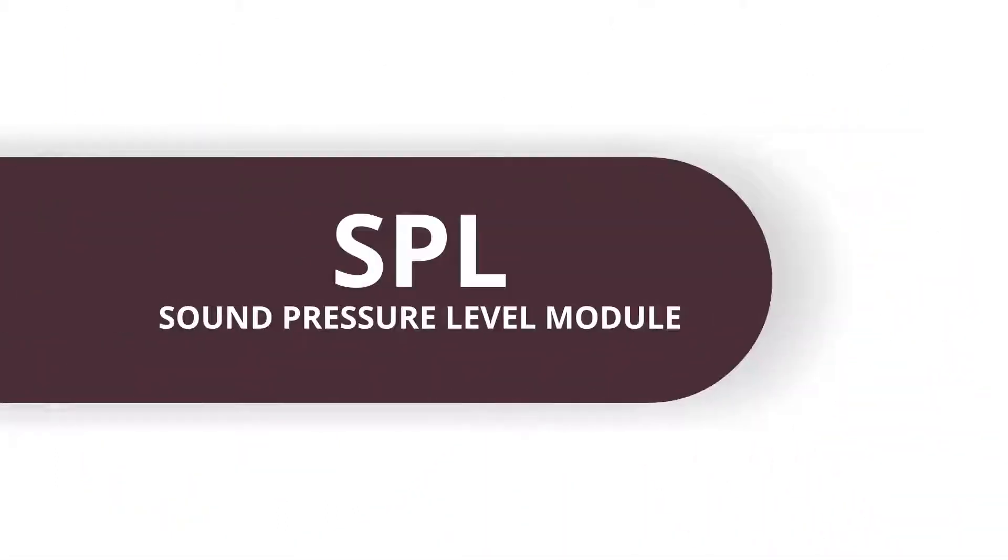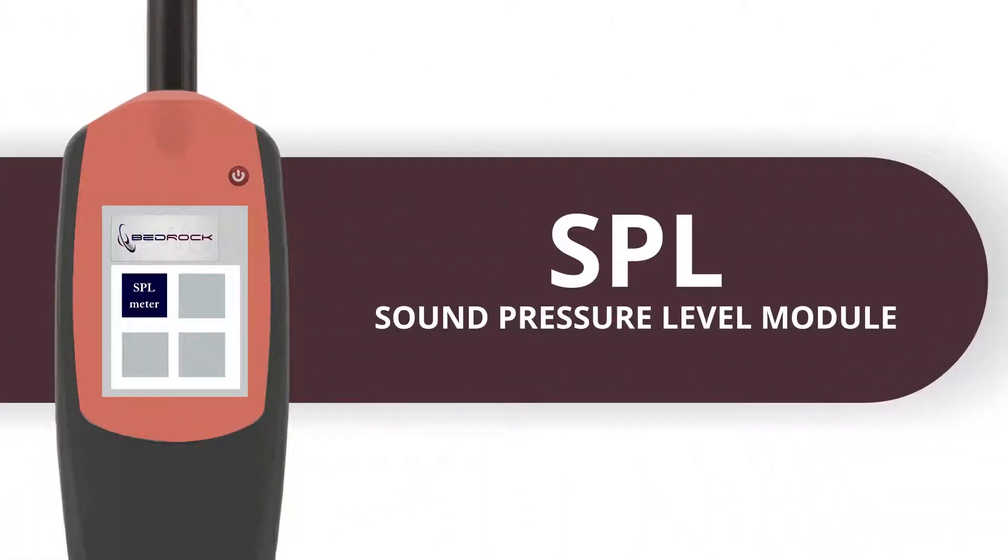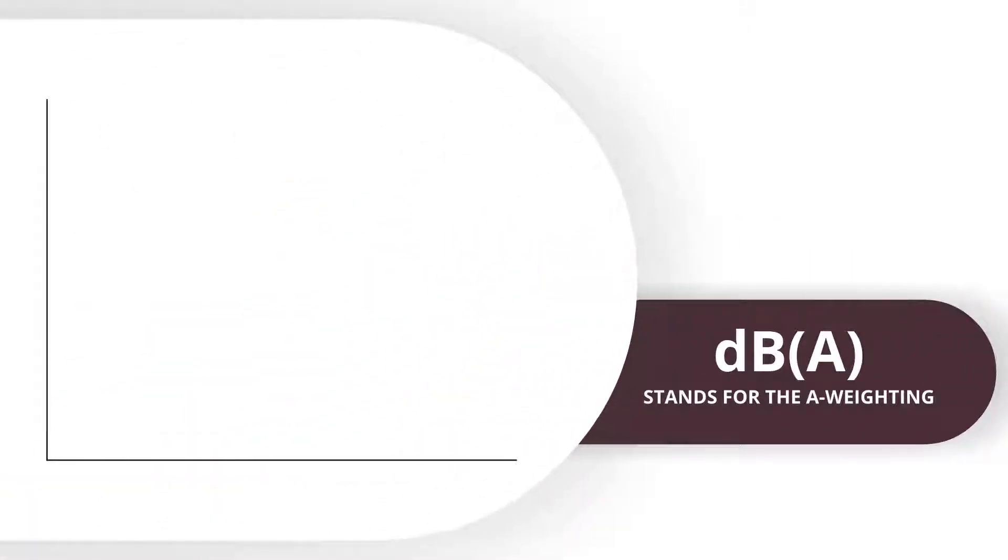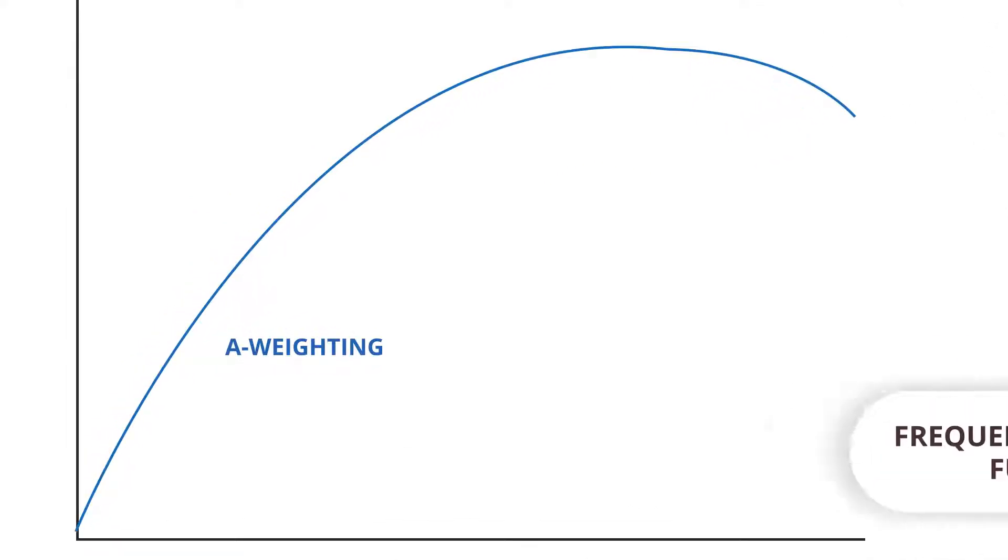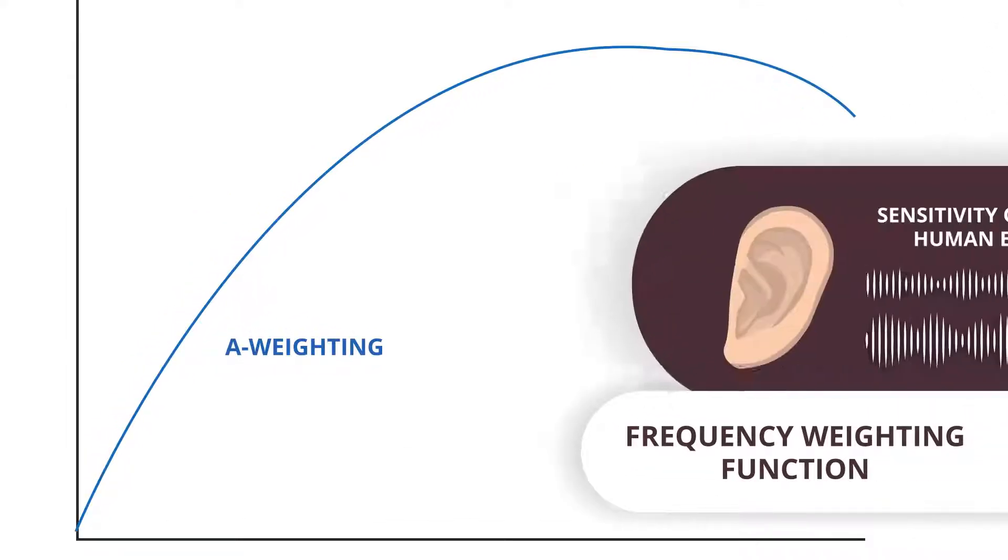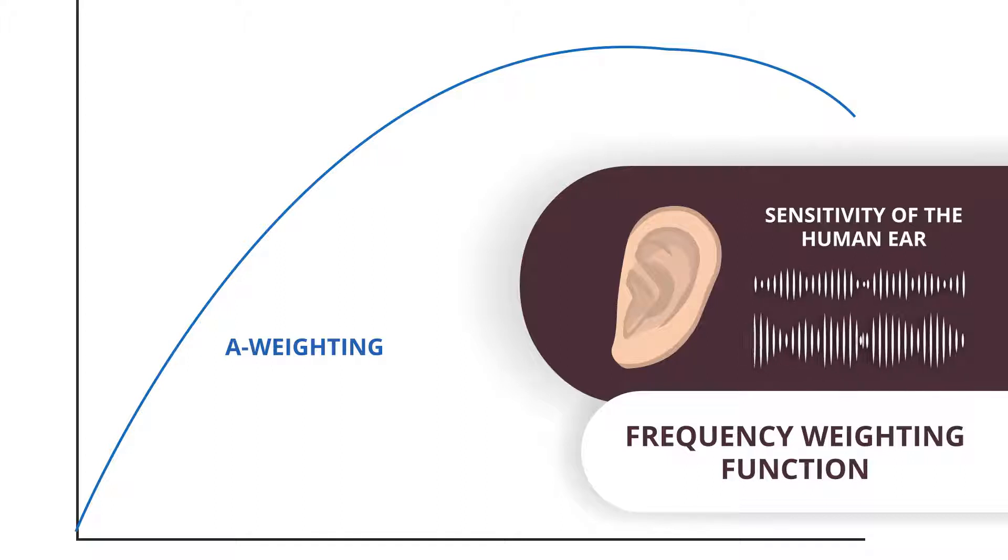The basic sound level meter functions are found in the sound pressure level module, which you can select from the main menu. The most common measure of the overall sound level is dB A. The A in dB A stands for the A weighting. This is a frequency weighting function that makes sure that the sensitivity of the human ear to different frequencies is taken into account.